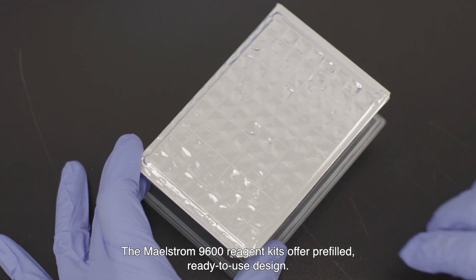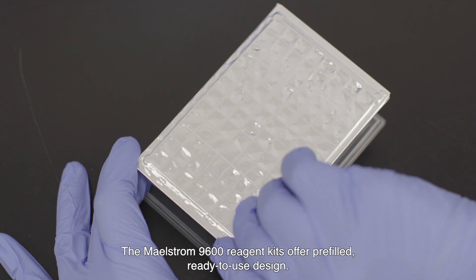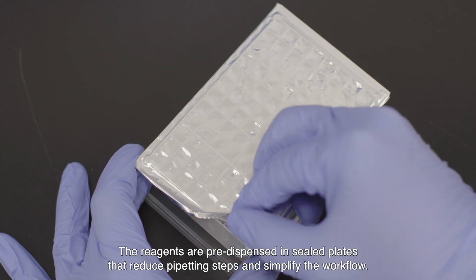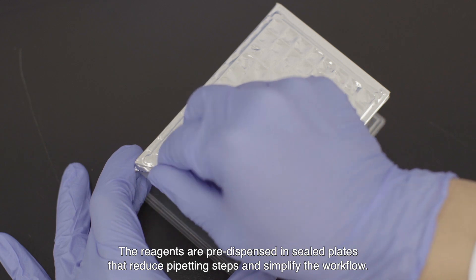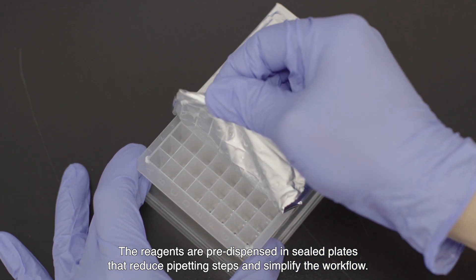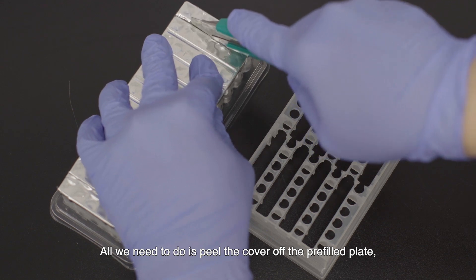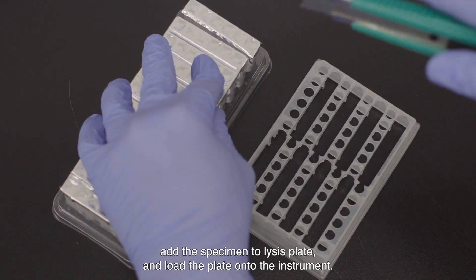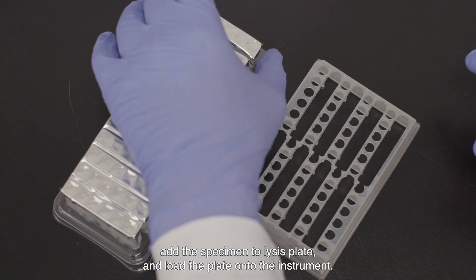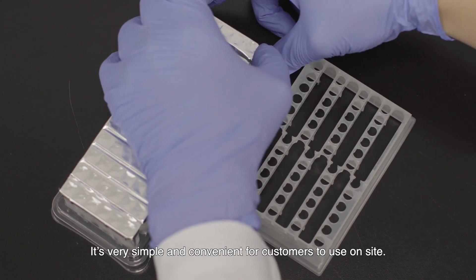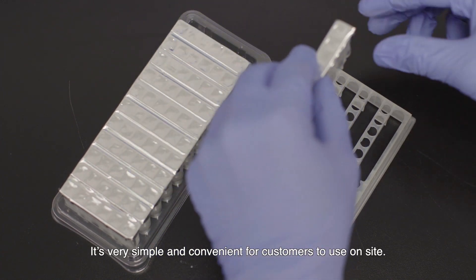The Maelstrom 9600 reagent kits offer pre-filled, ready-to-use design. The reagents are pre-dispensed and sealed plates that reduce pipetting steps and simplify the workflow. All we need to do is peel the cover off the pre-filled plate, add the specimen to lysis plate, and load the plate onto the instrument. It's very simple and convenient for customers to use on site.